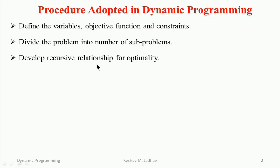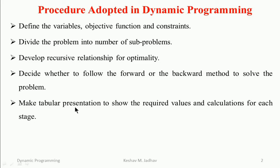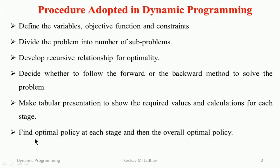Then develop a recursive relationship for optimality. The recursive relationship is the equation that we can use repetitively to find optimal values. Then decide whether to follow the forward or backward method to solve the problem. Then make a tabular presentation to show the required values and calculations for each stage or subproblem.